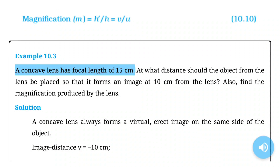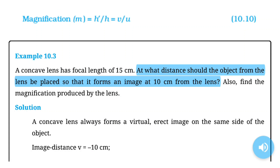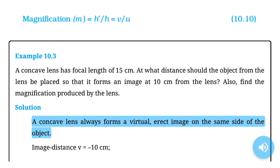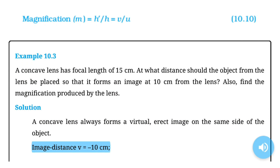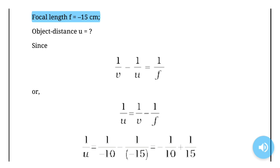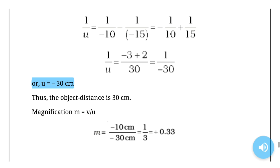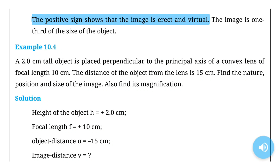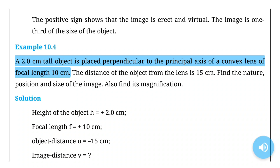Example 10.3: A concave lens has focal length of 15 cm. At what distance should the object from the lens be placed so that it forms an image at 10 cm from the lens? Also find the magnification produced by the lens. Solution: A concave lens always forms a virtual, erect image on the same side of the object. Image distance v = −10 cm; focal length f = −15 cm. Object distance u = −30 cm. Thus the object distance is 30 cm. Magnification m = v/u. The positive sign shows that the image is erect and virtual. The image is one third of the size of the object.